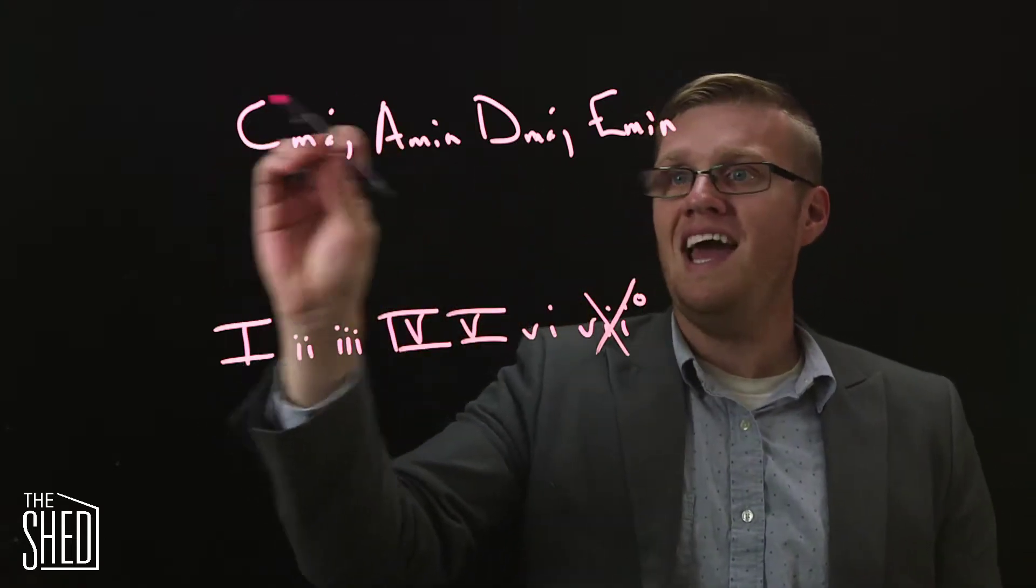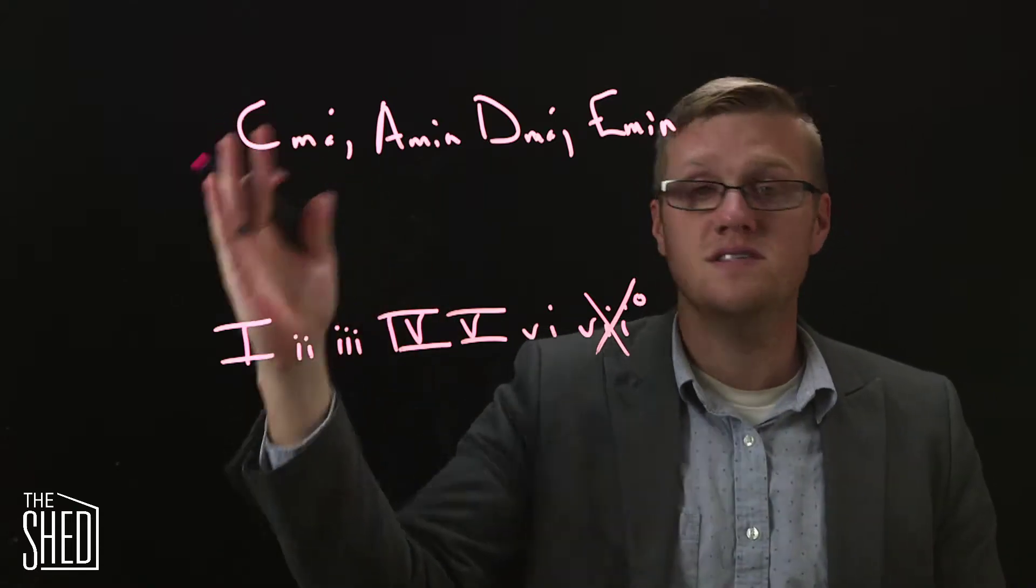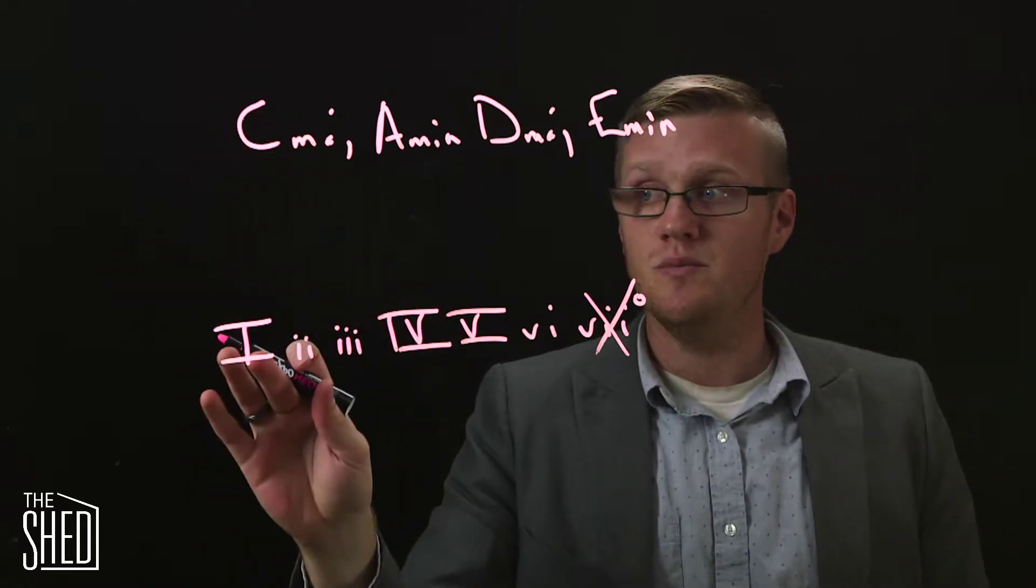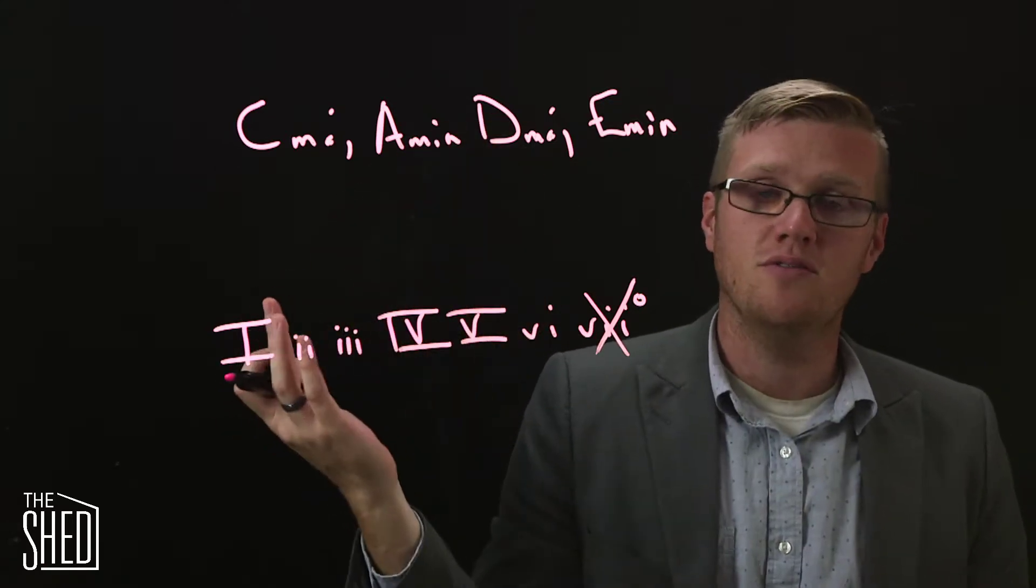So we could pick any one of these major chords and pretend that it's the one chord. So if it was C major, if we were in the key of C major, C would be one, D minor would be two. But this has a D major chord in it, so it won't work.